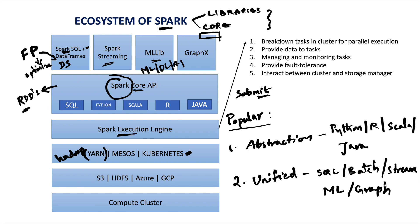This is why Spark is called a unified distributed computing engine. Another reason for Spark's popularity is that it is very easy to use — if we compare Spark with MapReduce, it is much simpler. We also have a growing ecosystem in Spark with a lot of libraries and algorithms ready to use. That's all for this discussion. See you in the upcoming session, thank you.